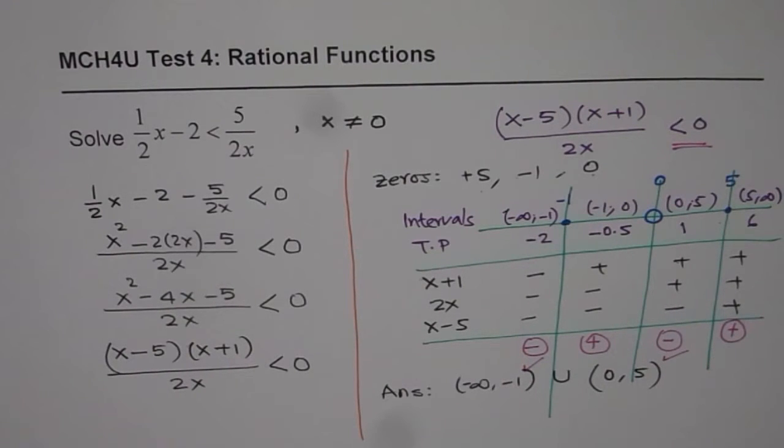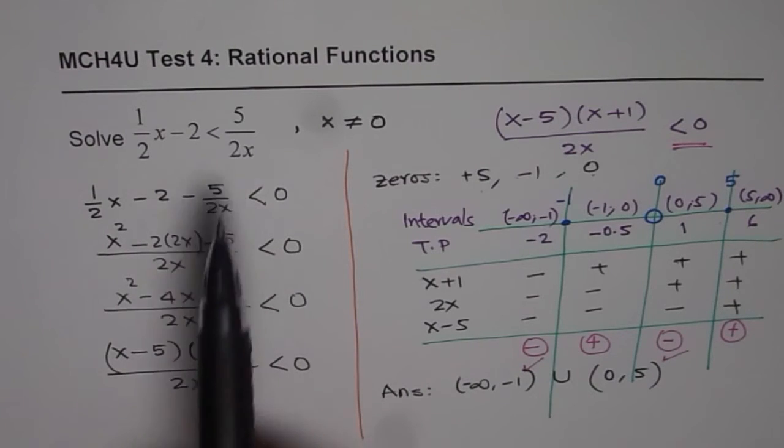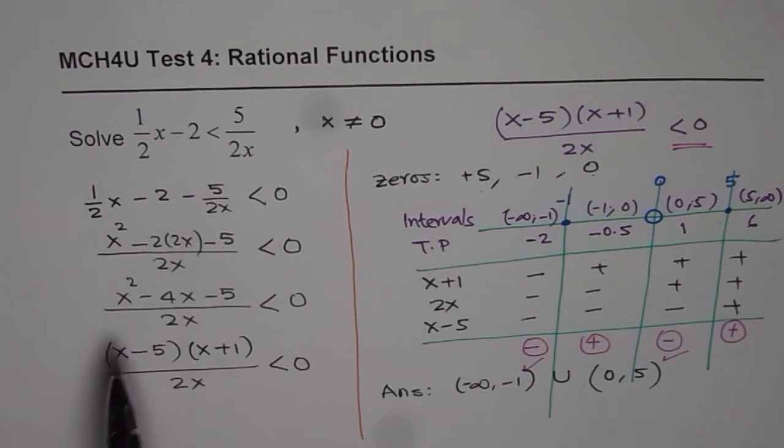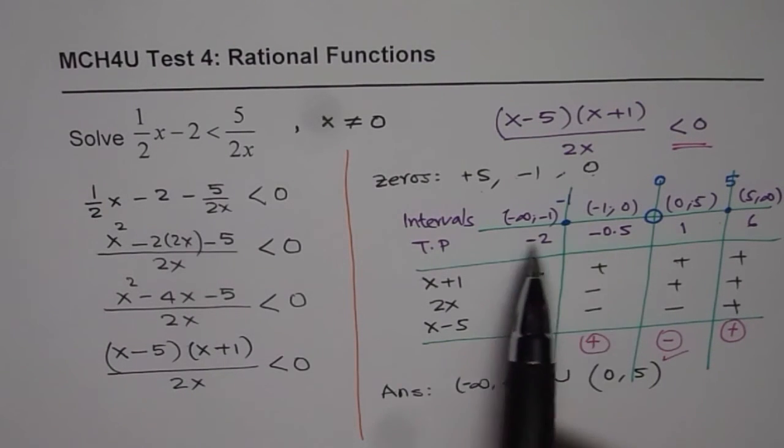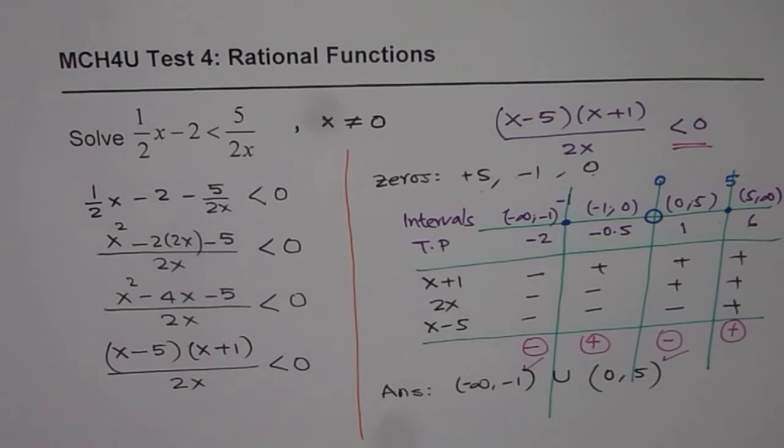So, that is the answer for the given inequality. Remember, when you have to solve rational inequalities, do not cross multiply. Just bring all the terms to one side, take common denominator, factor them, and then analyze each part of the interval with the help of test values. I hope that's absolutely clear. Thank you and all the best.